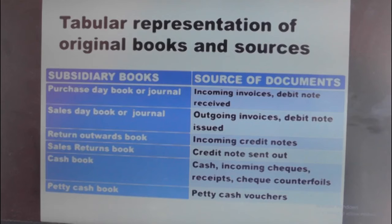We have another one, the Sales Return Book. The source of documents to the Sales Return Book is credit notes sent out. The credit notes sent out of the organization will be the source of documents to the Sales Return Book. For the Cash Book as a subsidiary book, the source of documents includes: cash itself, incoming checks, incoming receipts, and checks and counterfoils.